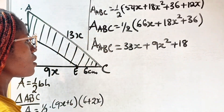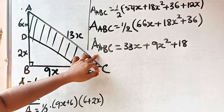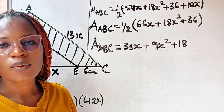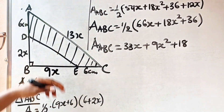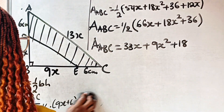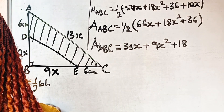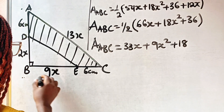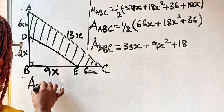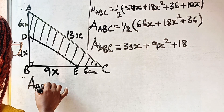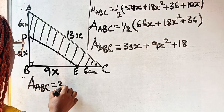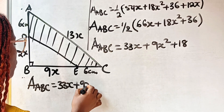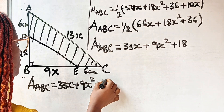Now this is the value of the area of triangle ABC. We are trying to get the area of the shaded portion, so just stay with me. Area of triangle ABC is equal to 33x plus 9x squared plus 18.